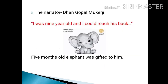Let's start with the lesson. The lesson is narrated by Dhan Gopal Mukherjee himself. As the lesson begins, he was 9 years old. He says, 'I was 9 years old and I could reach his bag' — this refers to Kari. When Dhan Gopal Mukherjee was 9 years old, he receives an elephant as a gift and this elephant was named Kari.